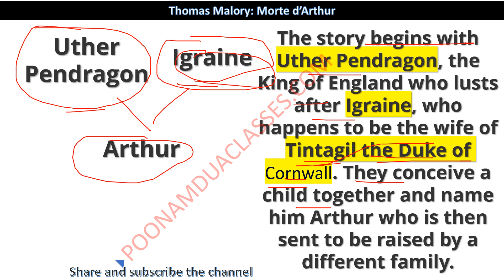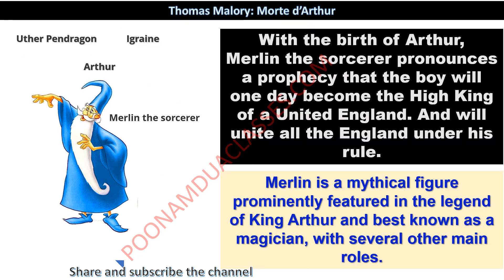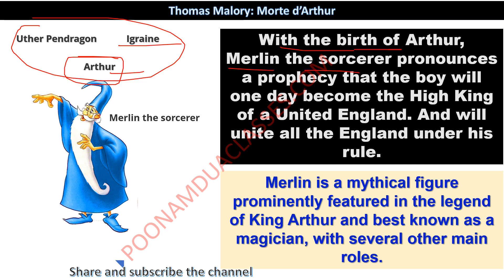We will plot this in short. That child is named Arthur, who is sent to be raised by a different family — under what circumstances and why we will come to know. Now let us know the equation: Arthur Pendragon, Igraine, and Arthur. With the birth of Arthur, Merlin the sorcerer — the magician, the prophet — pronounces a prophecy that the boy will one day become the high king of united England and will unite all of England under his rule.